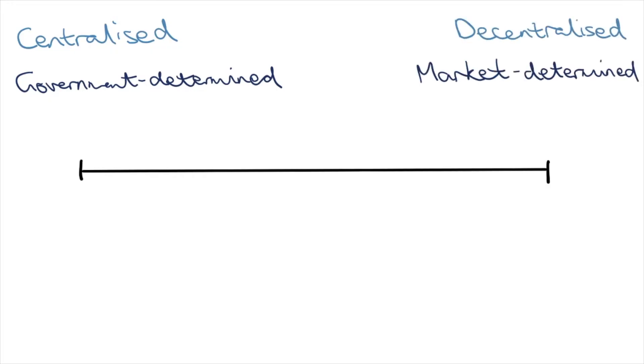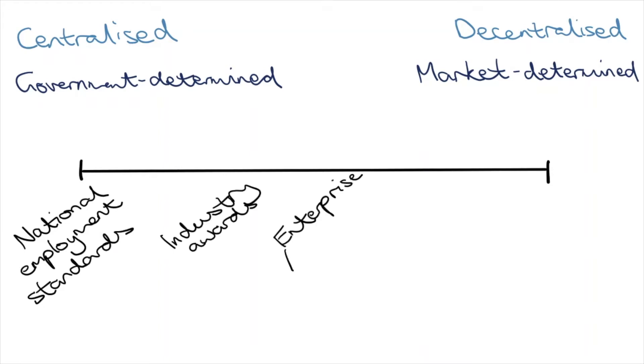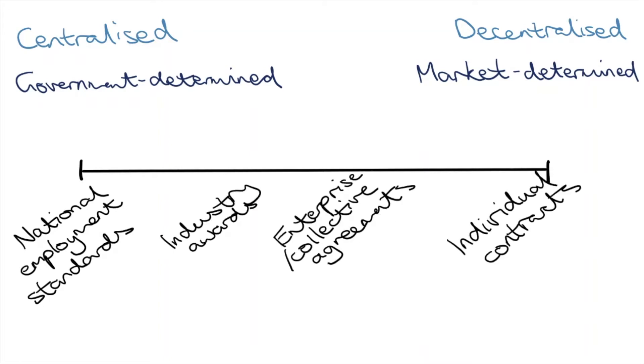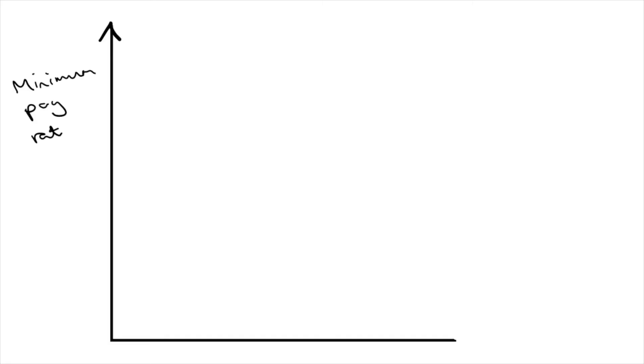Some textbooks and websites like to illustrate the various wage determination methods on a horizontal spectrum, but I like to use a vertical spectrum, as this better illustrates the different levels of safety nets.